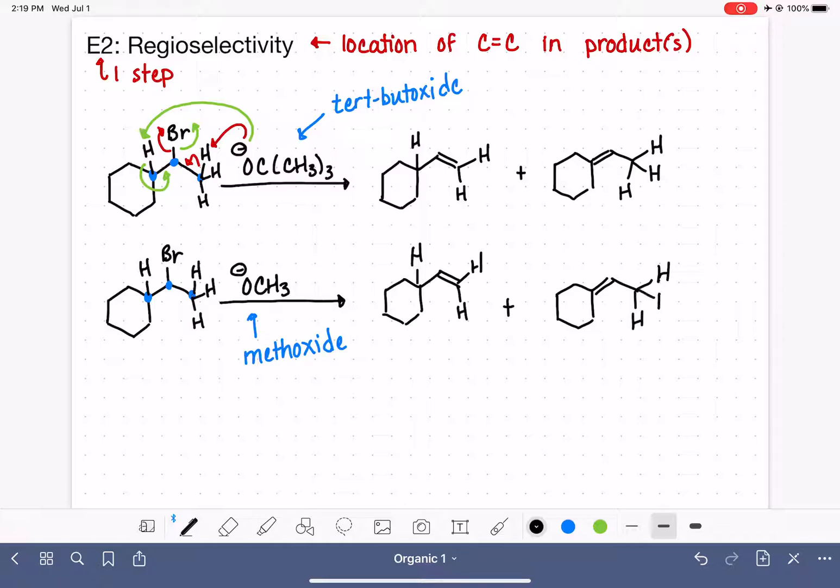Now you might be wondering what is the point of showing this with two different bases if they're going to make the same products, because they are. When we use different bases in the E2 reaction, such as tert-butoxide versus methoxide, we find that even though the reaction produces the same product, the molecules have a preference for one product over the other. Meaning that in this reaction right here, one of these two products is formed preferentially or in a greater amount. And we call that particular product the major product, because it's the thing that is made the most. We can predict which of these two products is the major product by understanding the structure of the tert-butoxide.